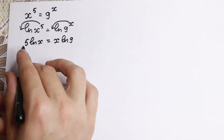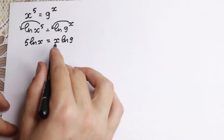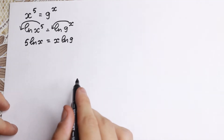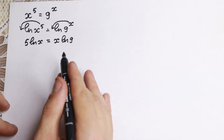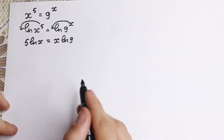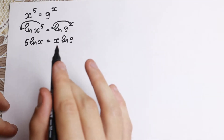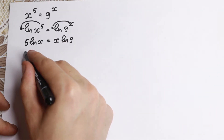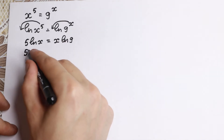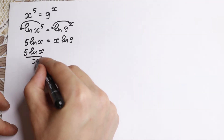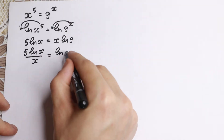Right now we have variables and a constant on the left, and the same situation — variables and a constant — on the right. We need to regroup: variables on one side and constants on the other. How can we do this? Let's divide both sides by x. If we divide by x, we can cancel it from the right, so as a result x will move to the left. So we get 5 times natural log x over x equal to natural log 9.